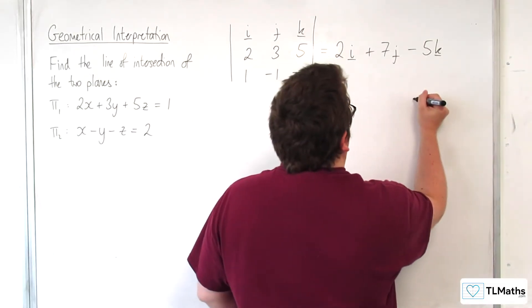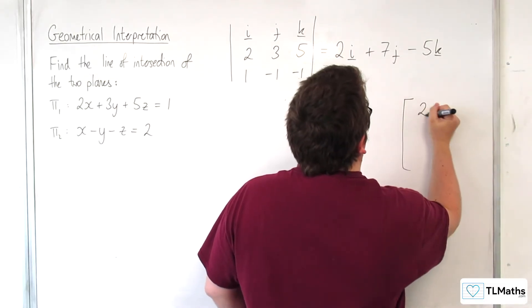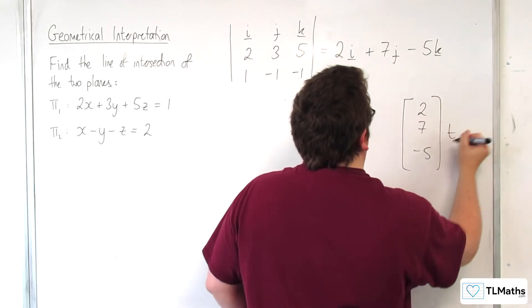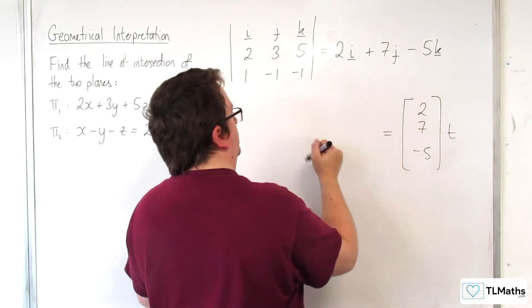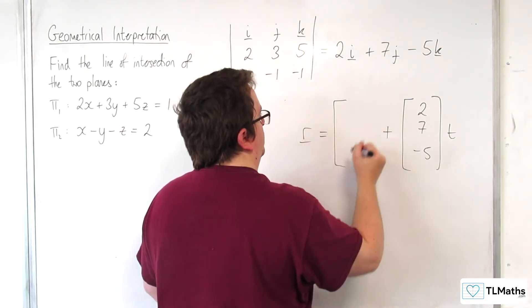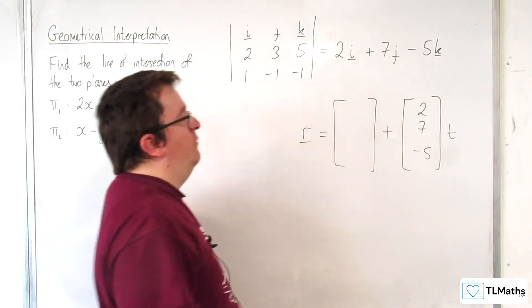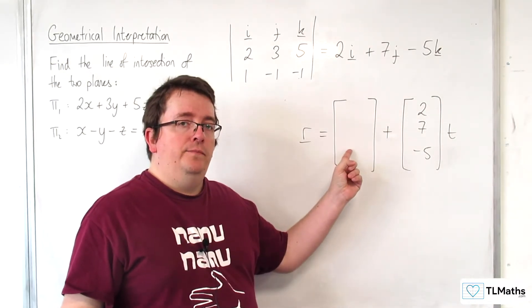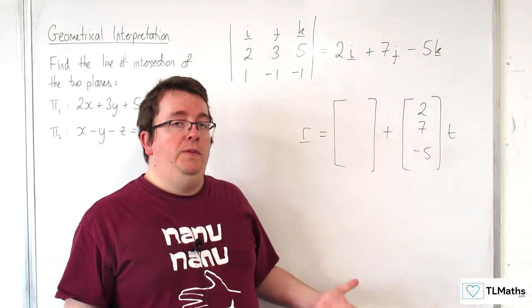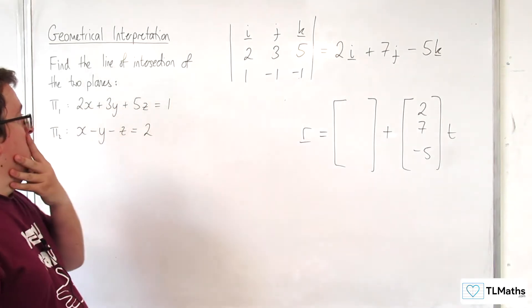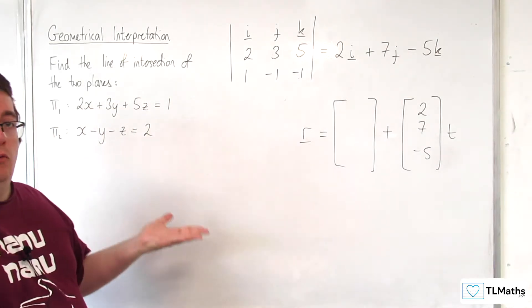So we know that is the direction of the line, so we've got the direction vector of our line, but we don't have the position vector. So what I need is a point that is common to both of these planes.